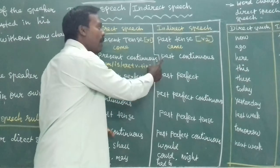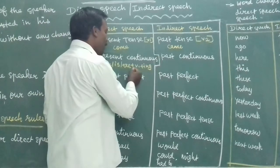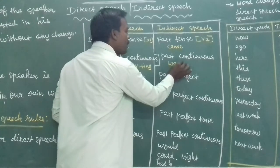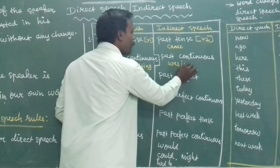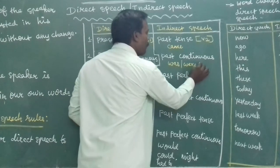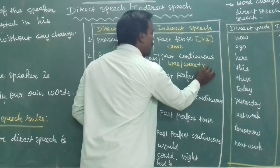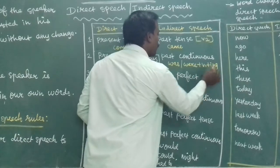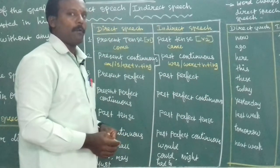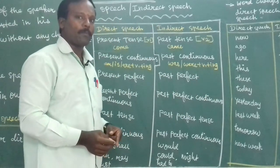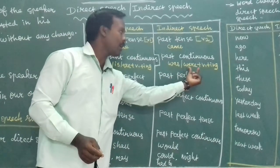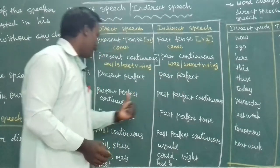Present continuous tense changes to past continuous tense. Past continuous tense is formed with was or were plus V1+ing. For example: was playing, was writing, were playing, were writing. This is past continuous tense.